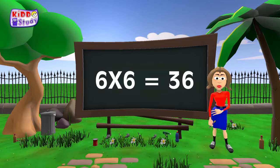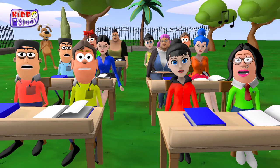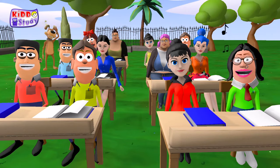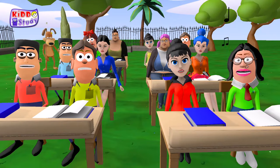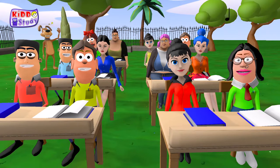Six sixes are thirty six. Six sixes are thirty six. Six sevens are forty two. Six sevens are forty two.